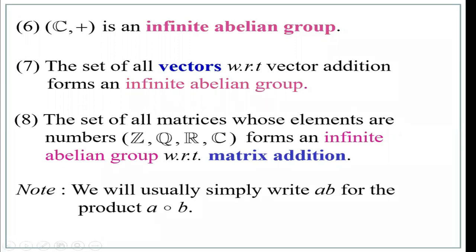We will usually simply write AB for the product A circle B. Sometimes we don't mention the binary operation explicitly — writing AB is fine. But when writing in an examination, you must mention the operation.